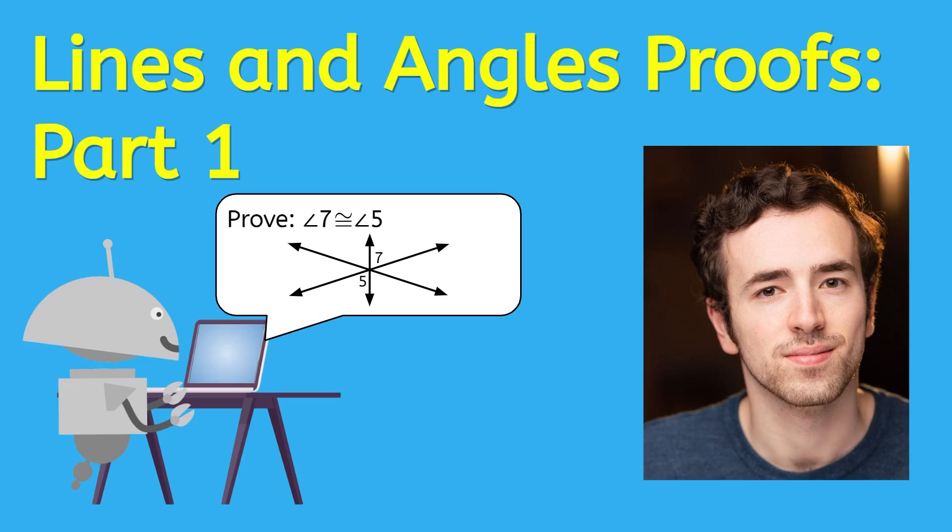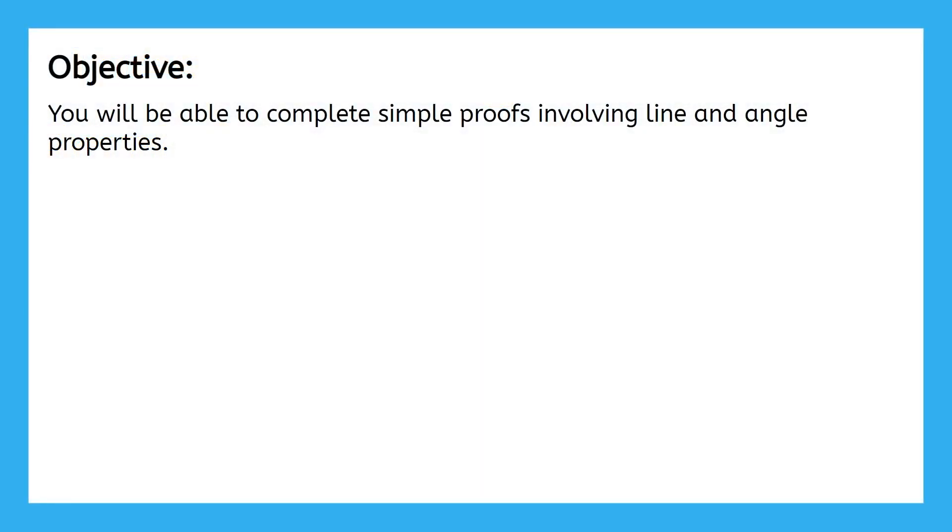Hey everyone, it's Justin again. In this lesson, we're going to be starting geometric proofs about lines and angles. You're going to need your property review table so that you can reference it to help you find reasons for each of your proof statements. By the end of this lesson, you will be able to complete proofs involving line and angle properties.